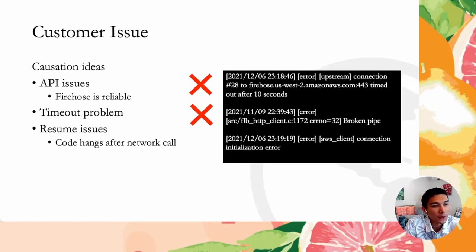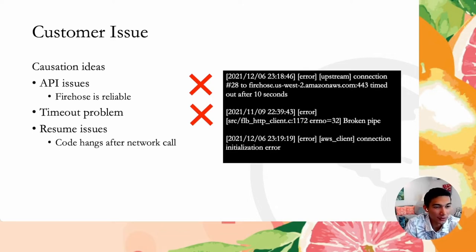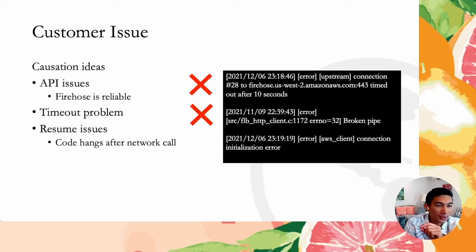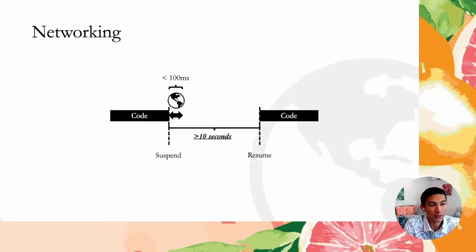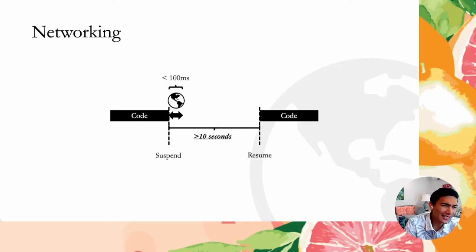When we profiled Fluentbit, we found that network calls complete within around 100 milliseconds or less. However, when you have code that makes a network call in Fluentbit, it actually takes around 10 seconds to complete the line of code responsible for making the network call. The actual network activity completes in about 100 milliseconds, but the code, when it gets to that point, takes 10 seconds to move to the next line. Whenever you make a network call in Fluentbit, there's some hanging — it hangs for like 10 seconds, and some of these problems appear right afterwards.